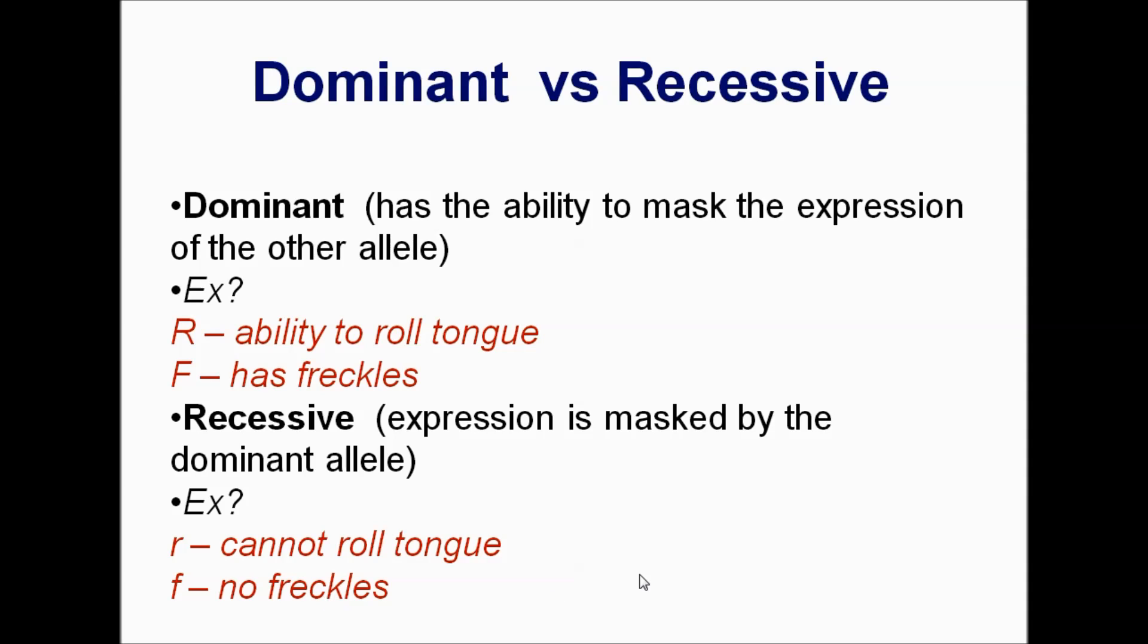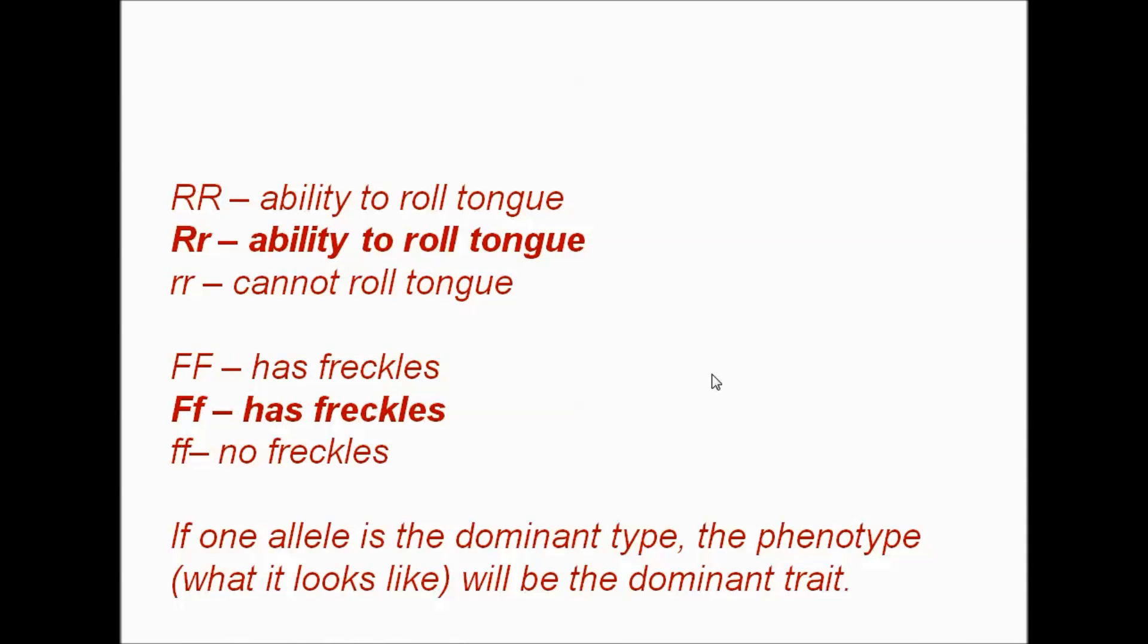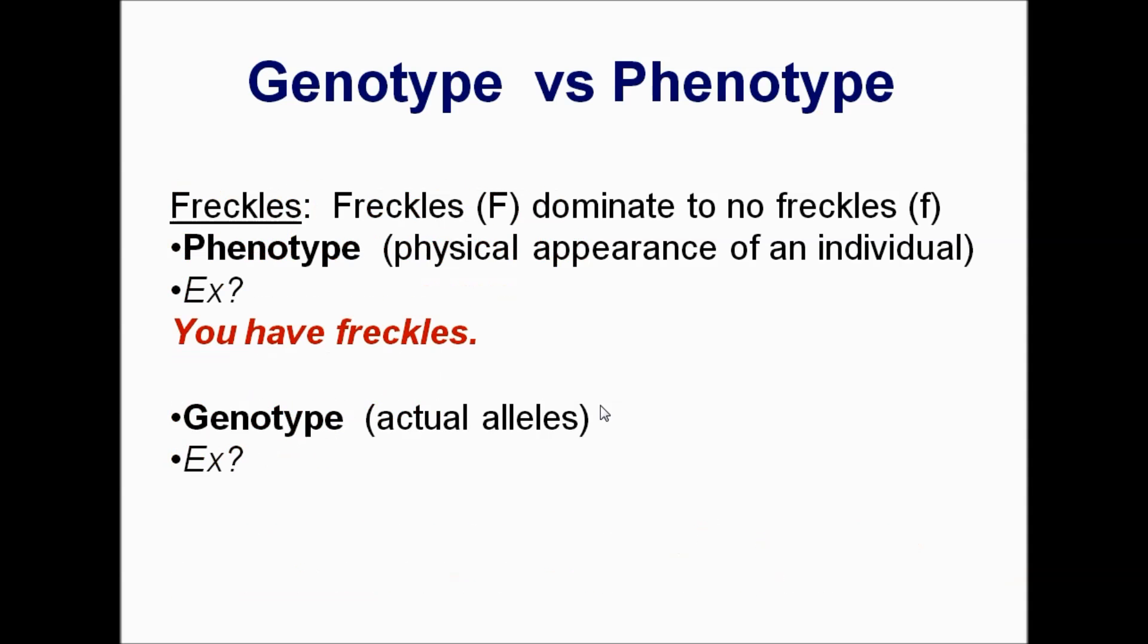Recessive, that means this is a guy that we can't see it. You won't express it in your phenotype unless there's two of them together. So if this R is with that R, you're going to be able to roll your tongue. But if you have two little r's together, got one from mom, one from dad, means neither one of them could roll their tongue, then you cannot roll your tongue. It has to be two recessives for that trait to show. Two recessive f's, no freckles. So let's look at the possibilities here. Rolling your tongue, two capital R's, you can roll your tongue. Big R, little r? Two little r's, you can't roll your tongue. Same thing happening for the F. If you have only one dominant gene in your genotype, you express that dominant trait. It only takes one because this one is masking that recessive right there.